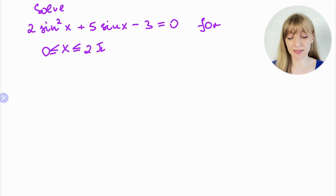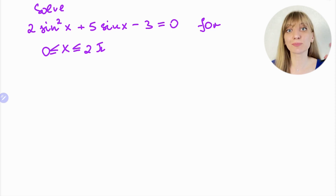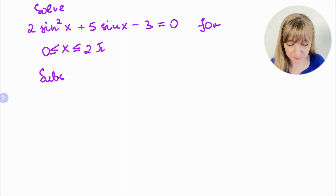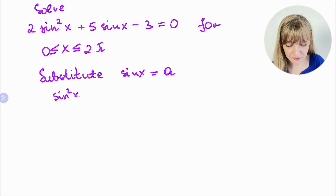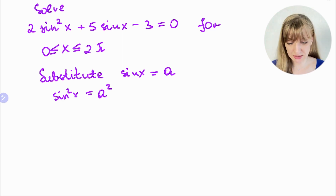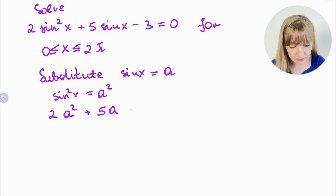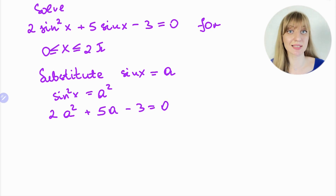You see that we have sin²x and sinx, so now we need to use substitution. If we substitute sinx = a (or any letter you like), then sin²x becomes a², and you can rewrite the equation. It becomes 2a² + 5a − 3 = 0. Now you see that you have a quadratic equation — at the moment it's not trigonometric, it's just a quadratic one.